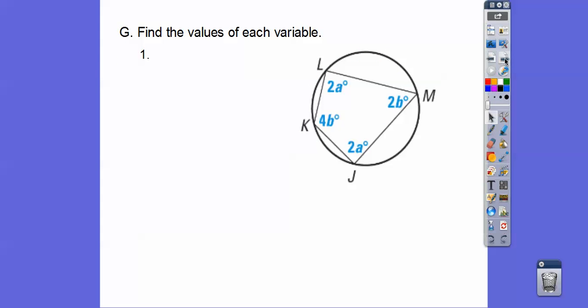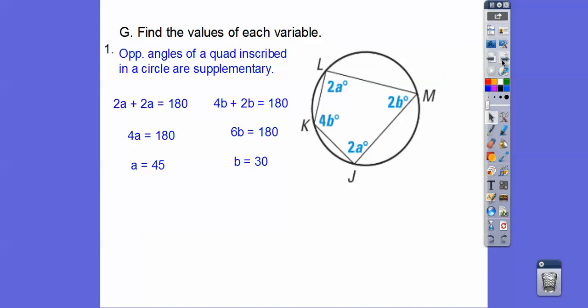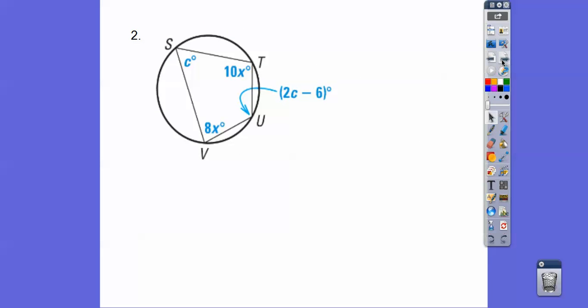Find the values of each variable. So when we have a quadrilateral inscribed in a circle, then opposite angles are supplementary. So, 2A plus 2A is 180. And 4B plus 2B is also 180. So, when we solve, we get 45 and 30. Same thing here. Opposite angles are supplementary. So, if we solve, we get 63 and 10.